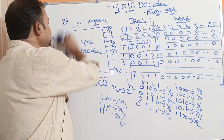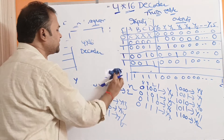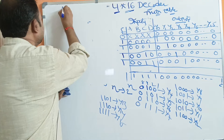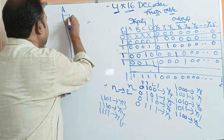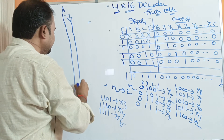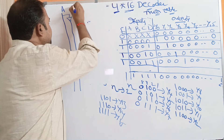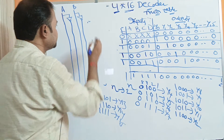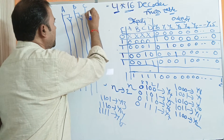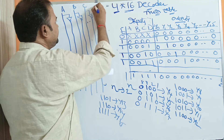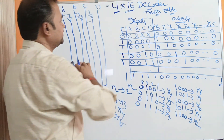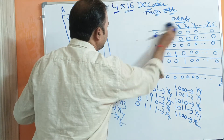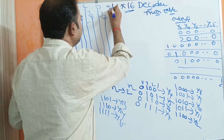Next, we have to draw the logic diagram. Here, how many inputs are required? We require 4 inputs — 4 input lines. The first input line is A, and next we require A-bar also, so we complement that line. This line represents A-bar. Next line is B, and we require B-bar also — this line represents B-bar. Next, C and C-bar. Next, D and D-bar. We also have enable input — this line represents the enable input.